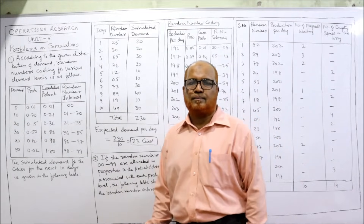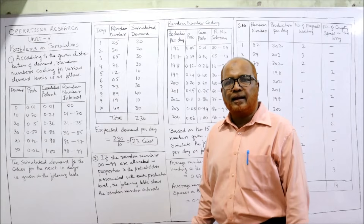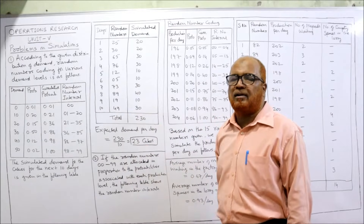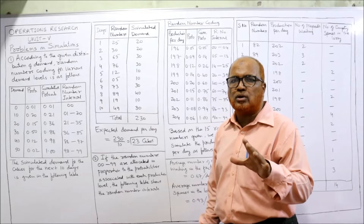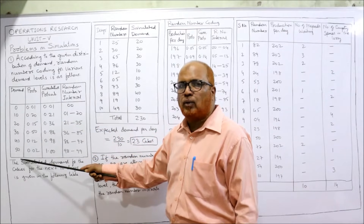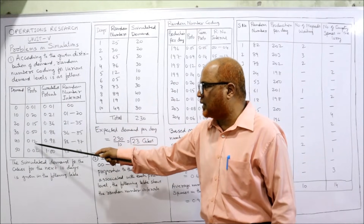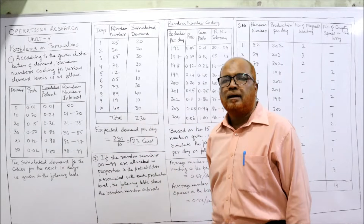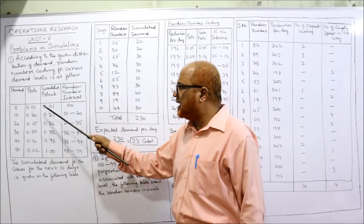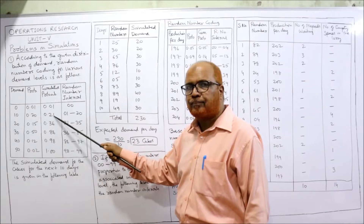Before finding out the simulation, we must know random number coding. We have to make random number coding according to the given distribution of demand. Your demand is 0, 10, 20, 30, 40, 50, and the probabilities are 0.01, 0.20, 0.15, 0.50, 0.12, 0.02. Now we need cumulative probabilities. The first cumulative probability is 0.01, then 0.01 plus 0.20 equals 0.21.